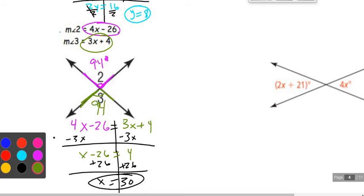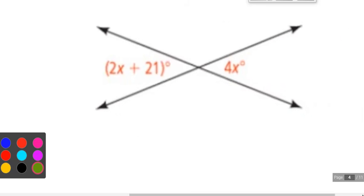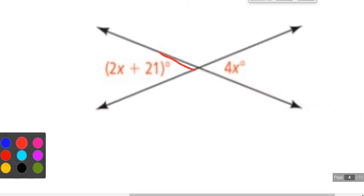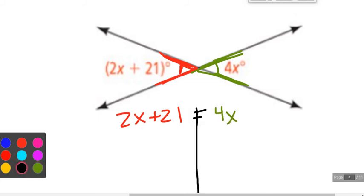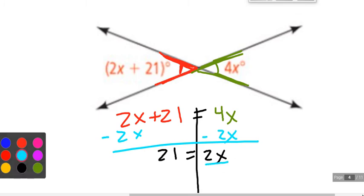Last example. This hopefully is becoming super repetitive. That's kind of the point of a review is to do problems until you feel so good about them that you know you can solve them on a test. So we have a vertical configuration. 2x plus 21. It's got to be the same as the other angle. In this case, it's going to be 4x. So immediately to the algebra, we'll subtract off 2x on both sides. That'll give us 21 is the same as 2x's. Divide by 2 on each side. X is going to be 10 and a half.